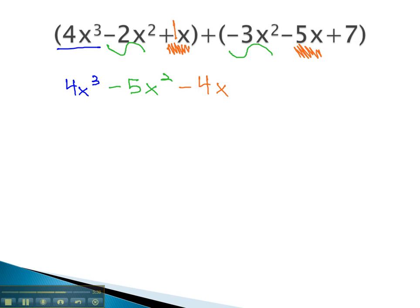The last term that hasn't been combined yet is the plus 7. Nothing to combine it with, so we'll put plus 7 at the end of our answer. And this becomes our simplified polynomial.